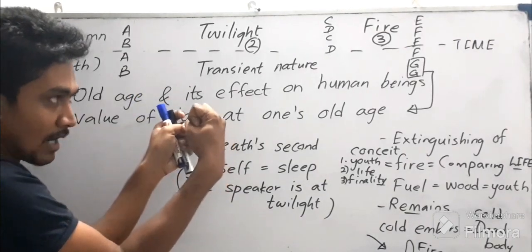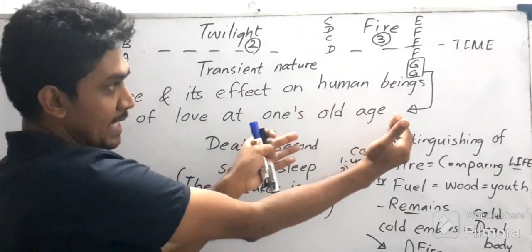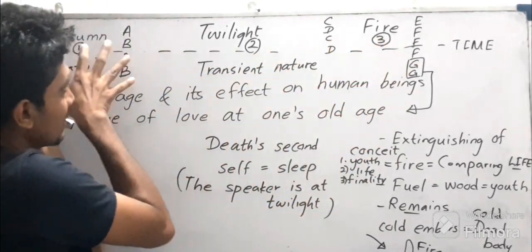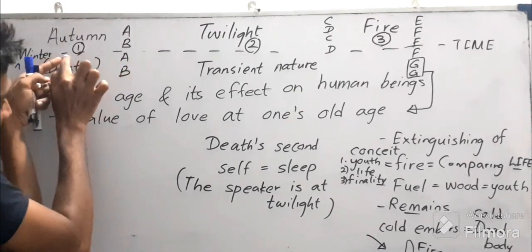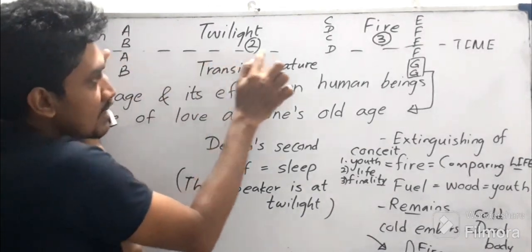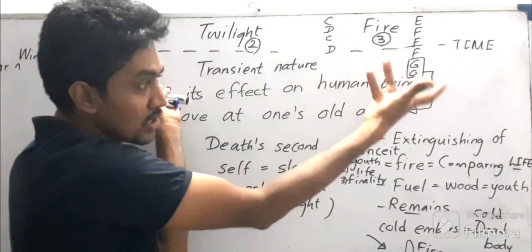So these are the three main imageries. Based on that, the underlying main concern is the time factor. The time factor finishes and we need to go away from this human life.